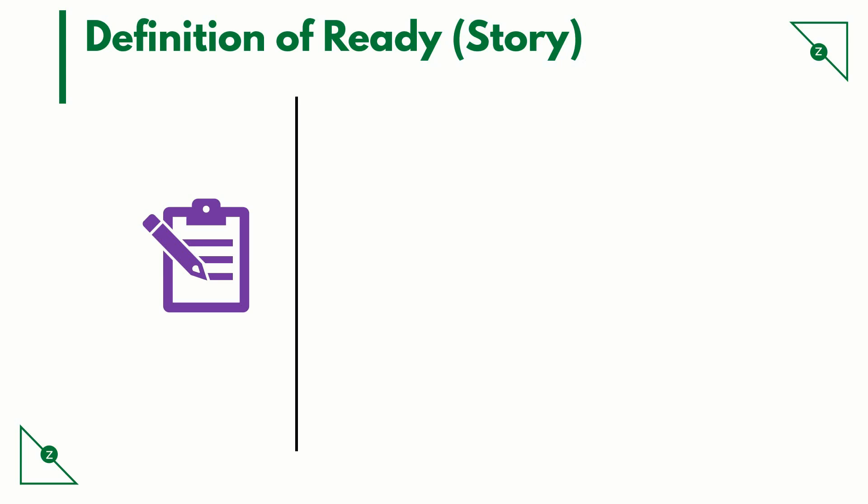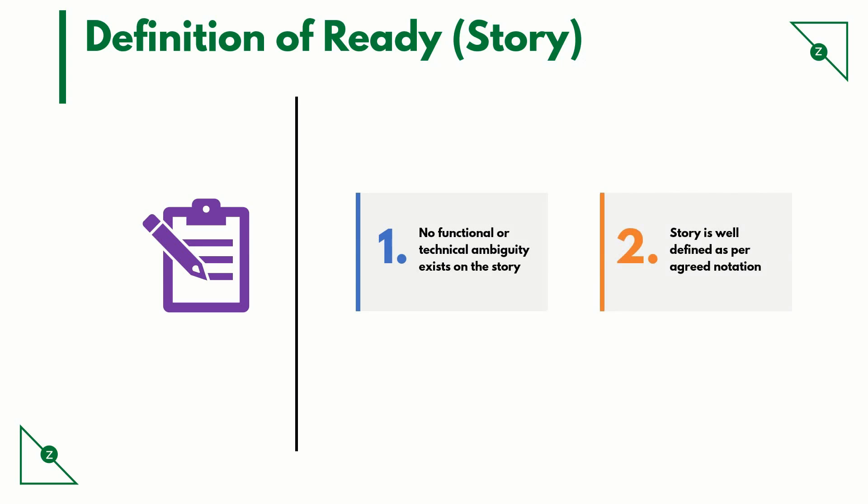Here are some example pointers for definition of ready for a story. No functional or technical ambiguity exists in the story. For functional ambiguities, the product owner should have resolved any open clarifications. On the technical ambiguity, either the technical lead or technical architect should have resolved any open questions. The story is well defined as per agreed notation — remember the BDD notation that we discussed earlier.